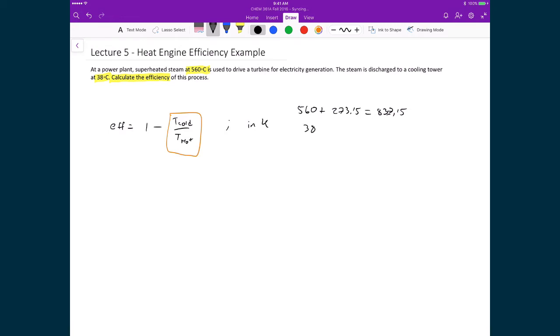If you write those values into this expression we get 1 minus T_cold, 311.15 divided by 833.15. When we evaluate this expression what we get is 0.63 or 63% efficiency.